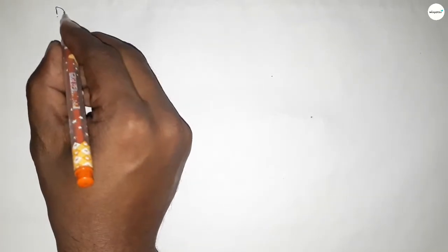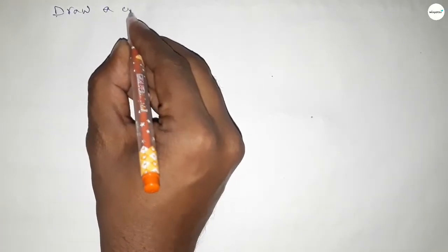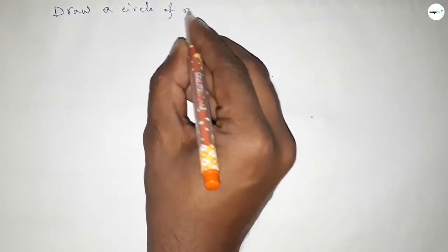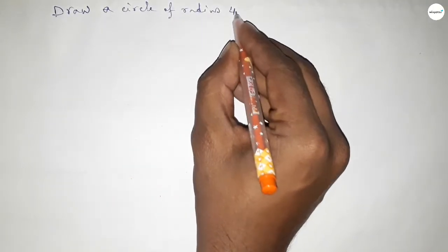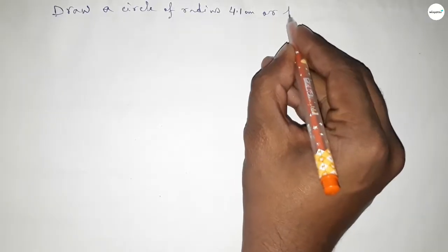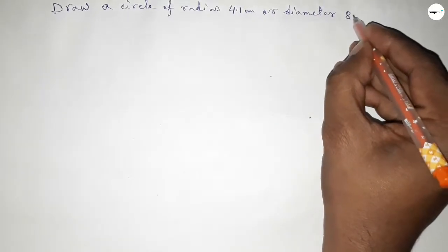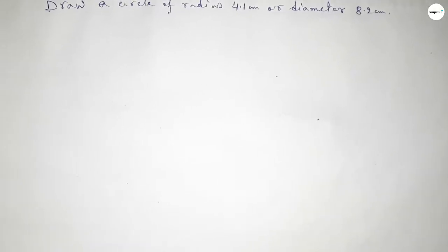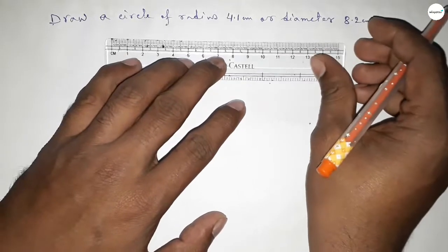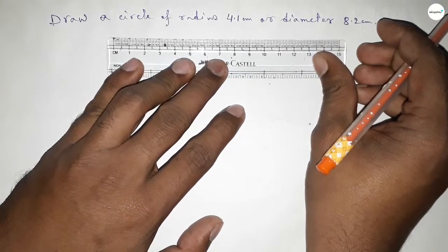Hi everyone, welcome to SSR Classes. Today in this video we have to draw a circle of radius 4.1 centimeter or diameter 8.2 centimeter. So let's start the video. First of all, drawing the radius.